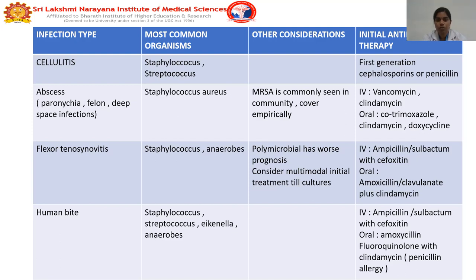For human bite infections, common organisms are Staphylococcus, Streptococcus, Eikenella, and anaerobic organisms. To cover this spectrum, antibiotics given are ampicillin-sulbactam with cefotaxime, or amoxicillin with fluoroquinolones with clindamycin.